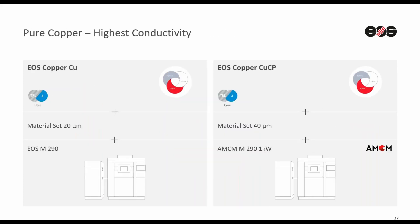If we look at the different alloy or material options — first, on pure copper, we offer two solutions. The first one is on our standard M290, and it's also the first copper material and solution that we developed, where we have a 20 micron material set and you can reach good conductivity levels. But by bringing more energy, you will still improve on the performance. So therefore, we've also brought out a solution on the one kilowatt system, an AMCM M290, where you have a 40 micron material set and really the highest possible conductivity.